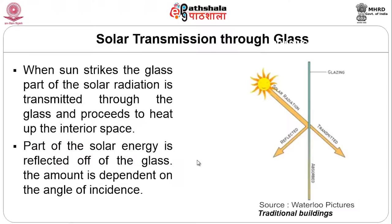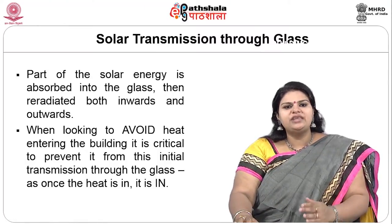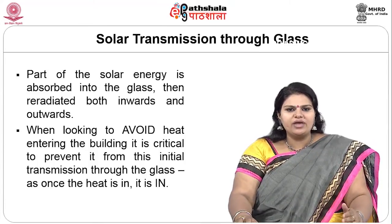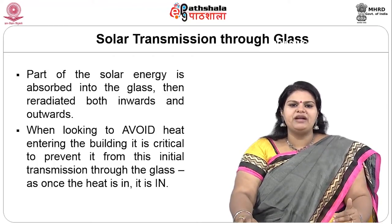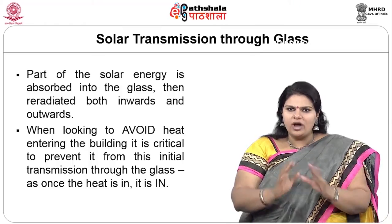Solar transmission through glass: when sun strikes glass, part of the solar radiation is transmitted through the glass and proceeds to heat up the space, while part is reflected. The amount reflected is dependent on the angle of incidence. In summer months when the sun angle is higher, we need to ensure our glazing is not oriented such that transmission exceeds reflection. It is critical to prevent heat from this initial transmission, because once the heat is in, it is in.